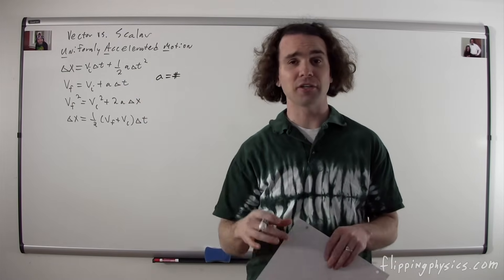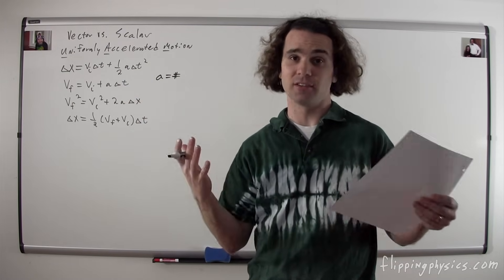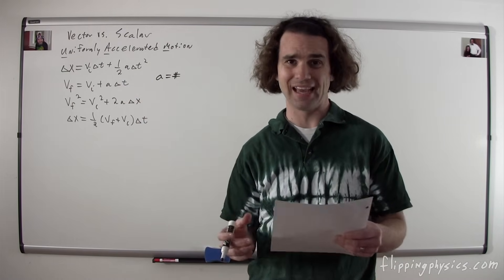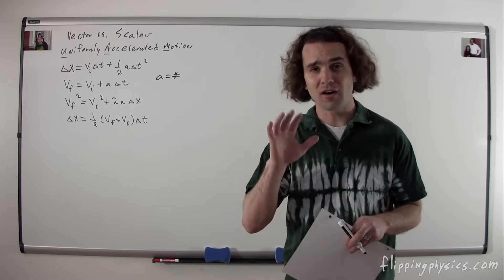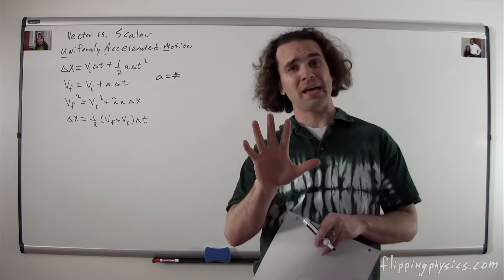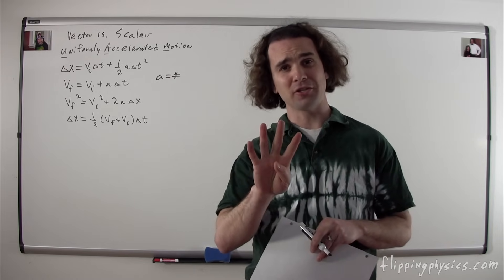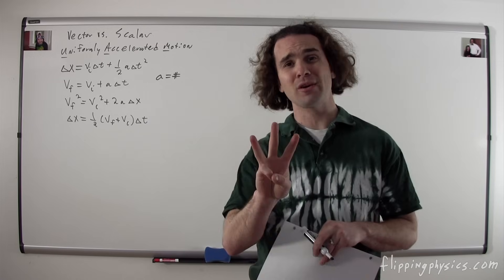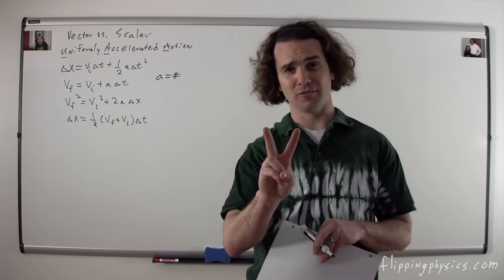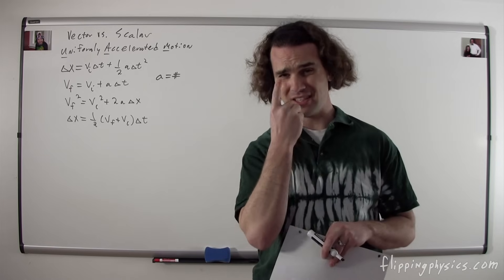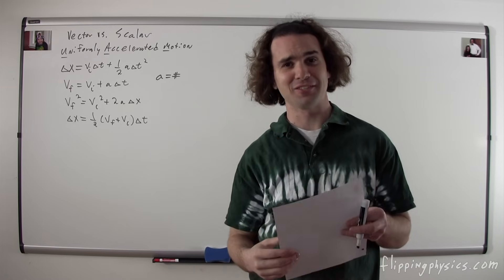In other words, the acceleration does not change — it is constant. UAM: uniformly accelerated motion. There are five UAM variables and four UAM equations. If you know three of the variables, you can figure out the other two, and this leaves you with one happy physics student.